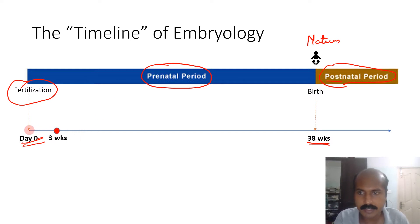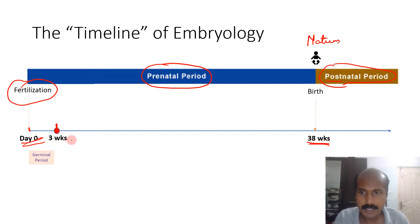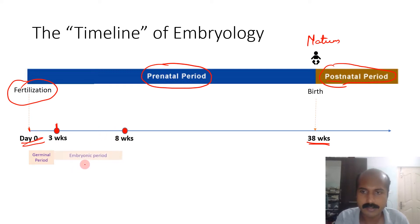The first three weeks, from day zero to the completion of three weeks, is called the germinal period. From the third week to the eighth week, that duration is called the embryonic period.